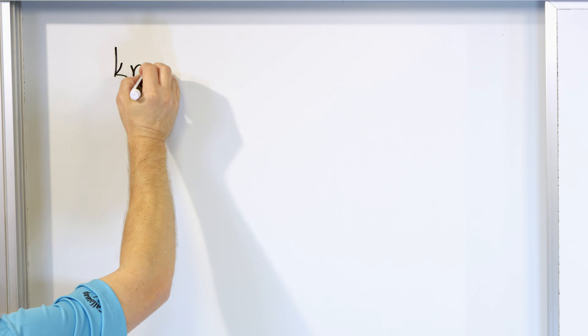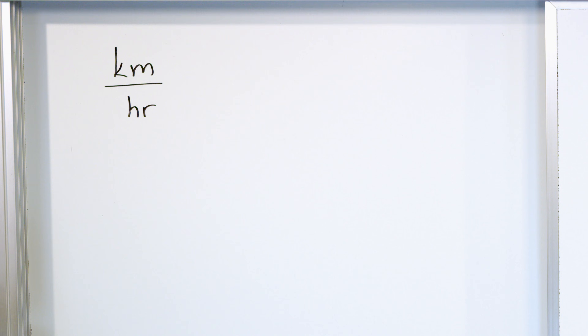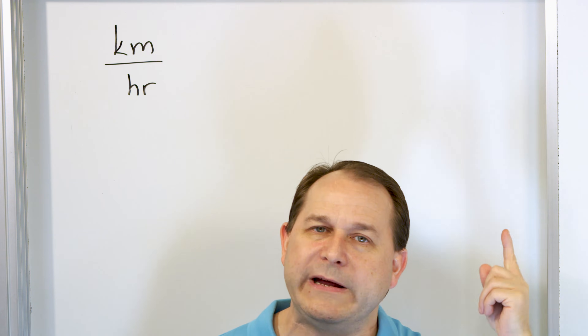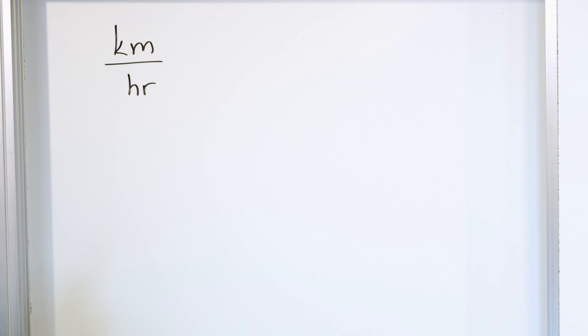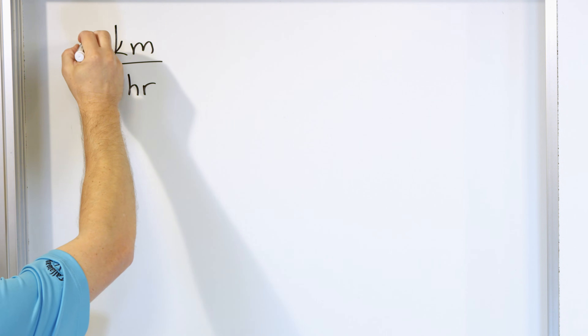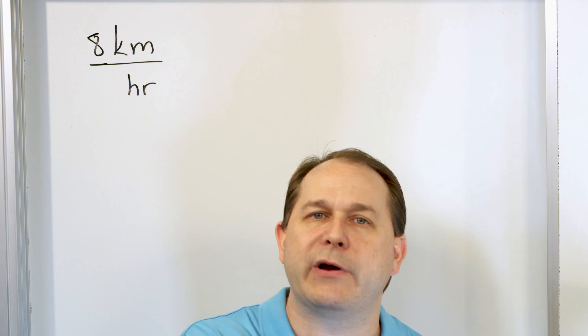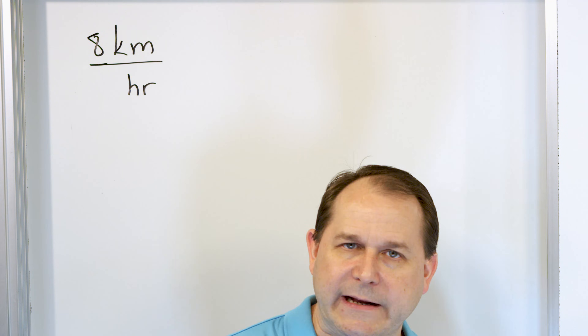When you're looking at miles per hour, or kilometers per hour, that's a unit rate because it's how many kilometers you're traveling for every one hour. It's called a unit rate because we're trying to see how much is happening per one of — in this case, one hour. For instance, if you had eight kilometers per hour, it means for every hour that goes by, you go another eight kilometers. Another hour goes by, another eight kilometers.